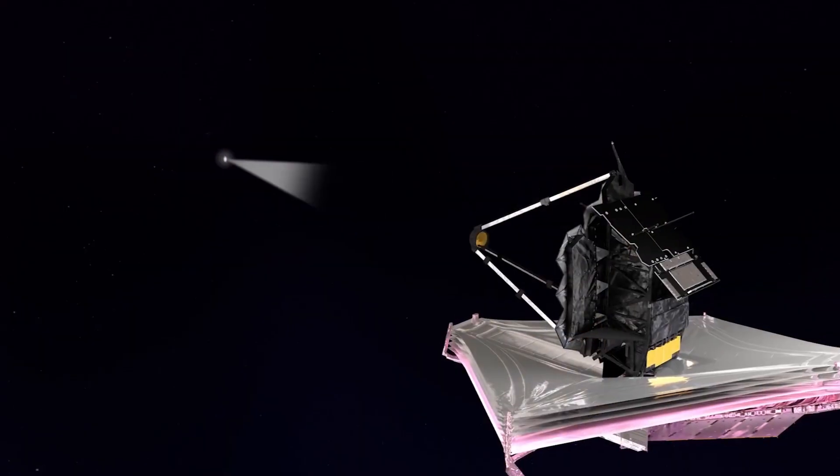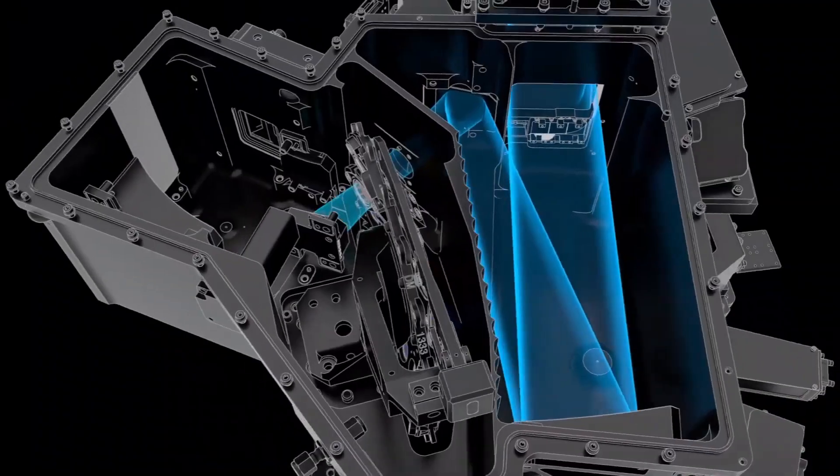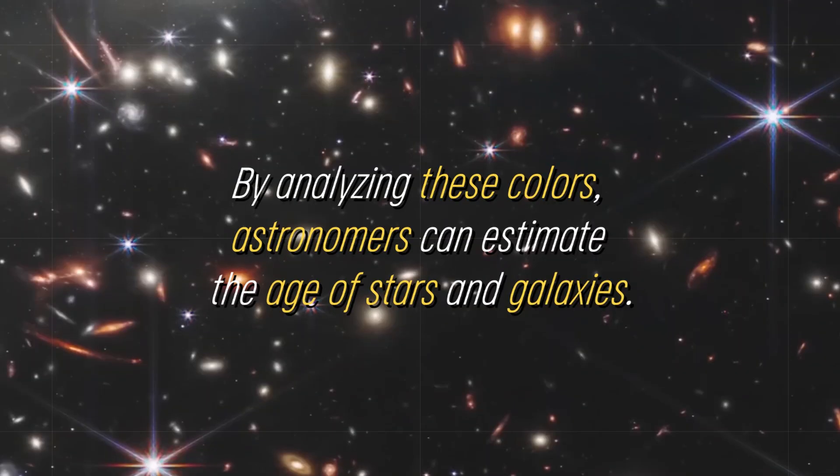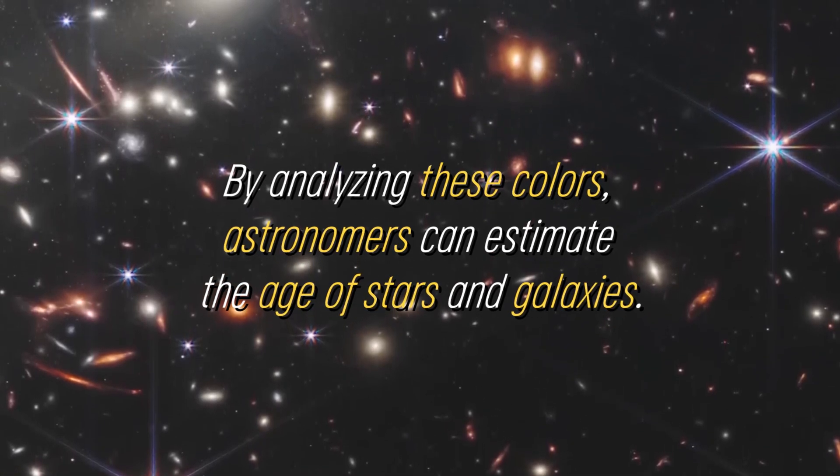The JWST is equipped with filters that allow imaging in the infrared part of the spectrum, which facilitates the study of the colors of distant galaxies. By analyzing these colors, astronomers can estimate the age of stars and galaxies.